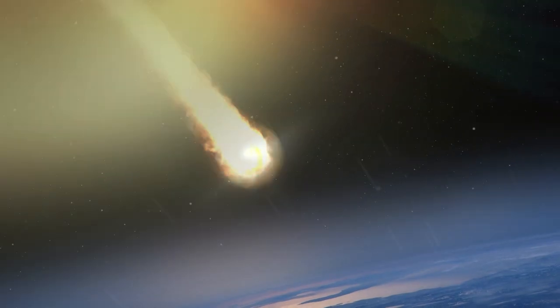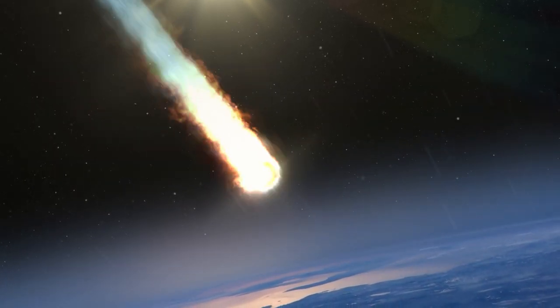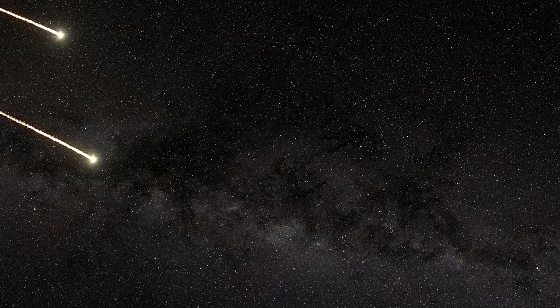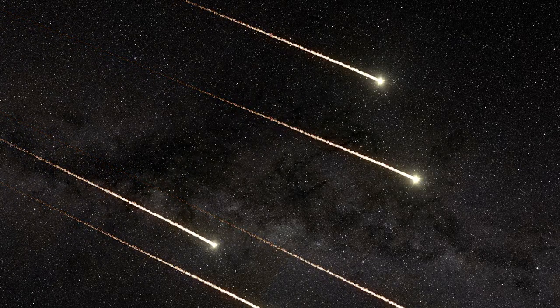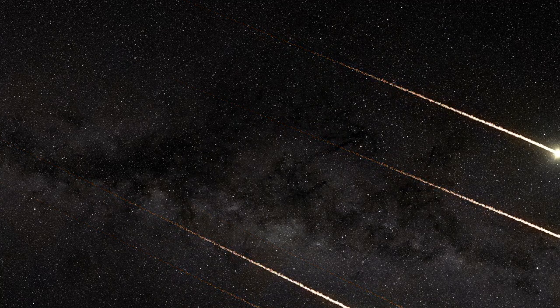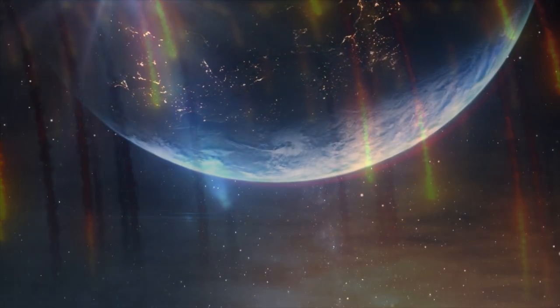When this comet gets close to the sun, its ices and dust particles heat up. This creates a bright show called a meteor shower, which is what we think of when we think of shooting stars. Even though this is a very long way off, there's no need to worry. Scientists point out how much energy this comet could release when it hits the sun. Surprisingly, this possible impact could be much more powerful than the asteroid that killed the dinosaurs.